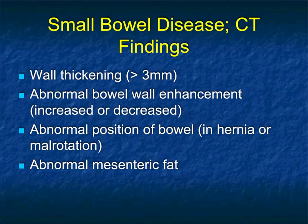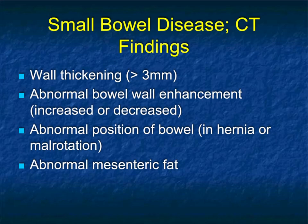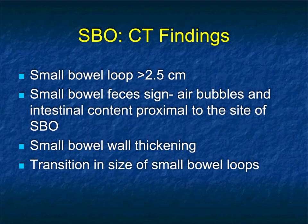We'll focus on small bowel disease. Small bowel wall thickening is typically over three millimeters — which basically means if you can measure it, it's thickened. We look for enhancement; increased or decreased enhancement becomes critical. Decreased is often with ischemia, though hyperemia can be seen in a range of findings from ischemia to infection to inflammatory changes. We look at positioning of bowel: is there obstruction, hernia, or malrotation? Other findings like mesenteric fat stranding are very helpful in pointing to areas of abnormality.